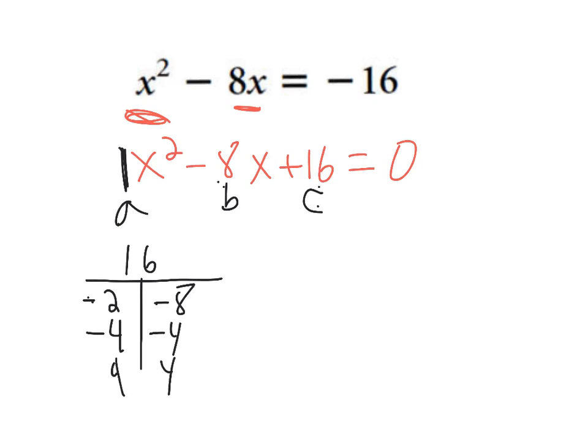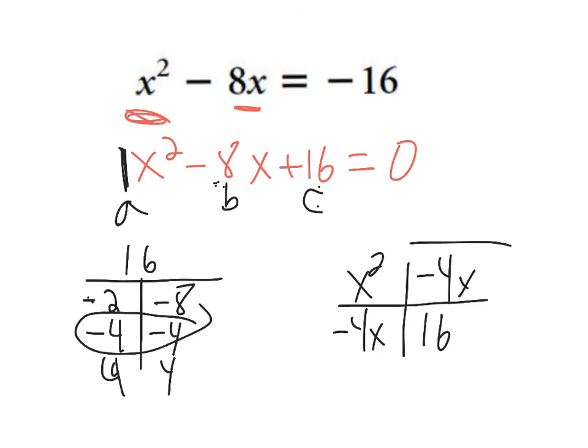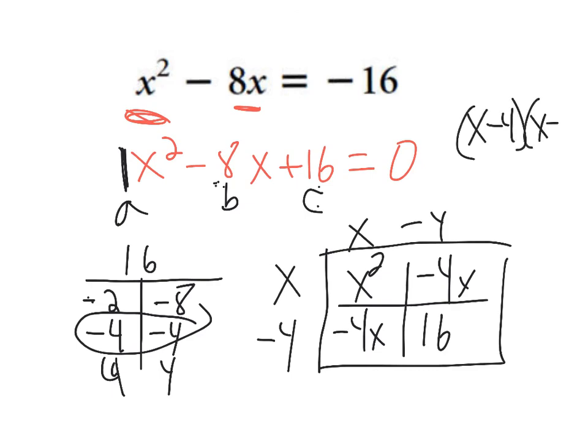So if I set up that little box with x² and 16, and I write negative 4x and negative 4x, now I do my factoring out. I can factor out x, I can factor out negative four. I believe it's going to be (x - 4) times (x - 4).